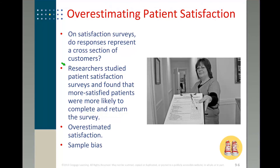Self-selection bias happens all the time. Sample bias can result in something inaccurate. An example shown here is overestimating patient satisfaction. Researchers studying patient satisfaction surveys find that more satisfied patients were more likely to complete and return the survey. This is a biased sample because of self-selection — people who are more satisfied are more likely to complete the survey, resulting in an overestimate of satisfaction.